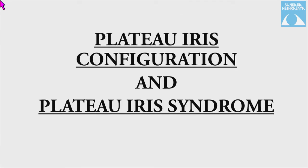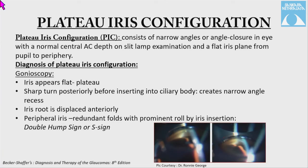Plateau iris configuration is a narrow angle or angle closure in an eye with a normal central anterior chamber depth on slit-lamp examination and a flat iris. It is diagnosed on gonioscopy and UBM. On gonioscopy, the iris appears flat but takes a sharp posterior turn before inserting into the ciliary body, creating a narrow angle. The iris root is displaced anteriorly and the peripheral iris shows a redundant roll — giving a typical double hump or S-sign.